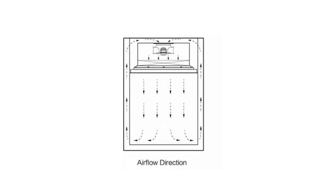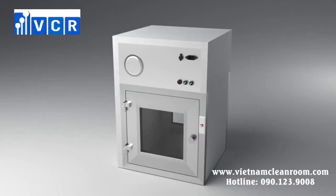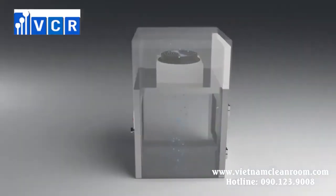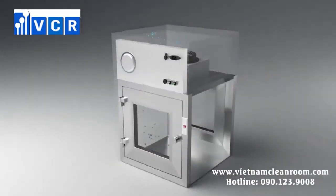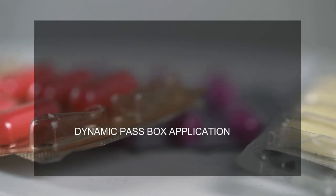The dynamic pass box is a self-cleaning pass box. When the fan inside the pass box blows, it sends air to the HEPA filter. The filtered clean air enters the chamber of the pass box and filters the inside space. It then passes through the return air grill, circulates back to the fan, goes through the HEPA filter again, and is sent into the inner space. This cycle continues until the surface of the conveyed material is purified.